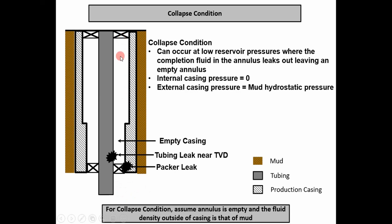Another situation could occur if you have a leak at the bottom of the tubing with low reservoir pressure — the completion fluid can leak out, also due to a packer leak. If this leaks out, the annulus becomes empty near the bottom, so the pressure inside is zero. You have a tall mud column on the outside, which produces high hydrostatic pressure at the bottom pushing in, and this tends to collapse the casing string.